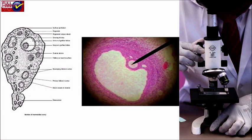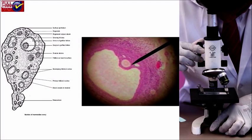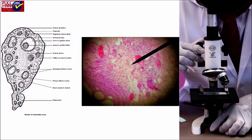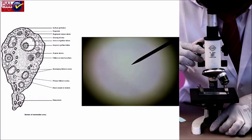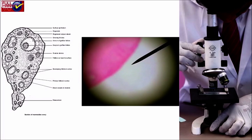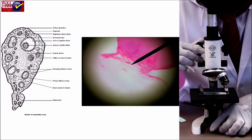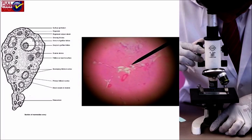Pre-antral follicle: a non-cellular material called zona pellucida is formed between the primary oocyte and granulosa cells; a theca layer begins to form, making the boundary of granulosa cells. Early antral follicle: a fluid-filled space called the antrum is formed between the granulosa cells; antral fluid is secreted by the granulosa cells themselves. Graafian follicle or mature follicle: ovulation occurs at this stage and the antrum is expanded.